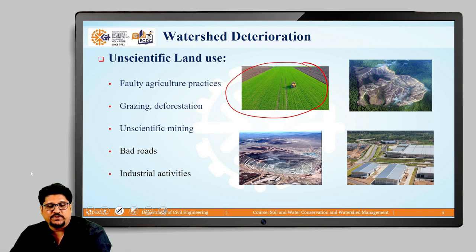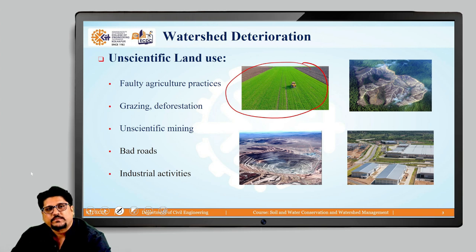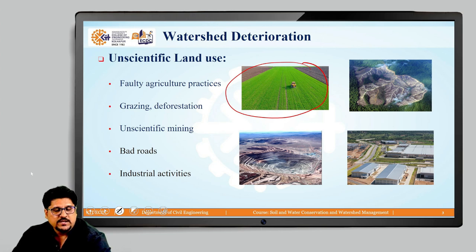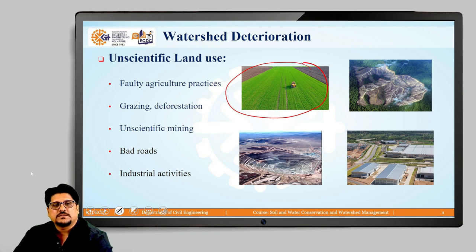Another issue as far as agricultural land is concerned is the lack of shifting of cultivation. Generally, a single crop is cultivated every year, so the soil becomes infertile, and because of these unmanaged or unscientific practices, subsequent issues may arise in the particular watershed.